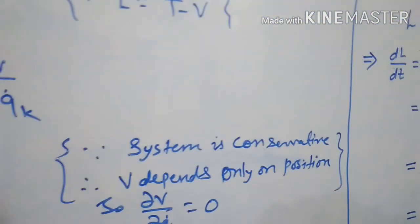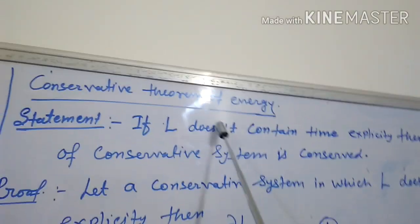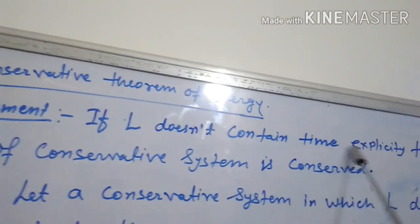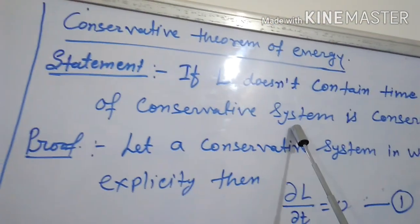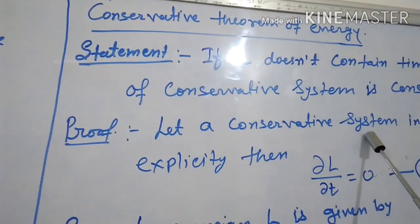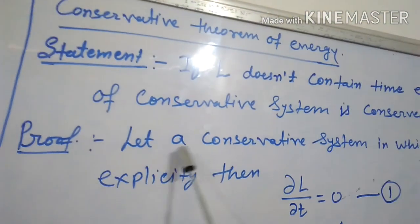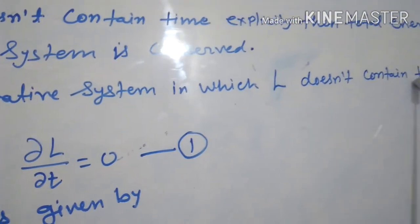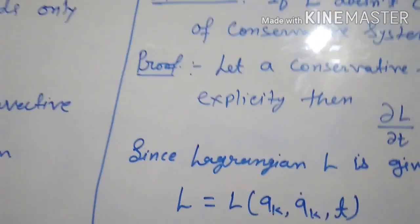Our next topic is the conservation theorem of energy. Its statement says: if L does not contain time explicitly, then the total energy of a conservative system is conserved. To prove this, we let a conservative system in which L does not contain time explicitly according to the statement. Then del L upon del t is equal to zero — call this equation number one.